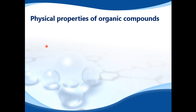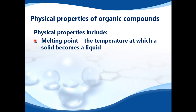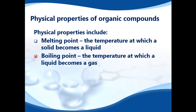Let's look at physical properties of organic compounds. Physical properties include melting point — the temperature at which a solid becomes a liquid — boiling point, the temperature at which a liquid becomes a gas, and density, which is mass per unit volume. We'll be looking mainly at boiling point in this video.